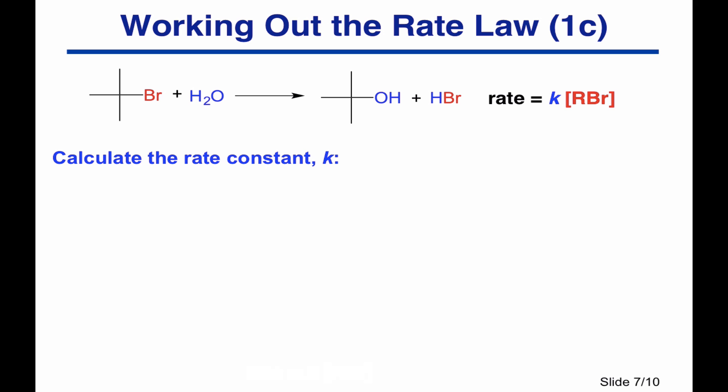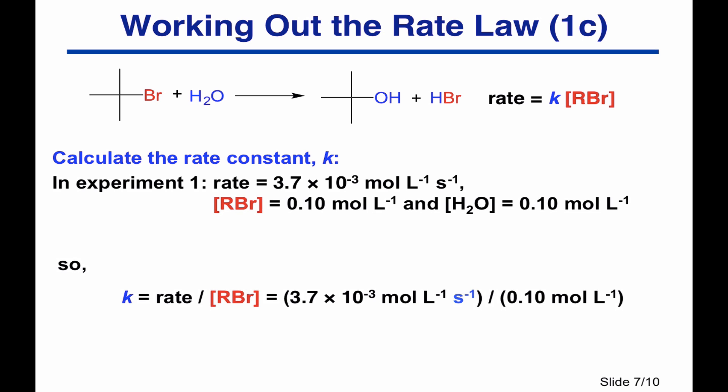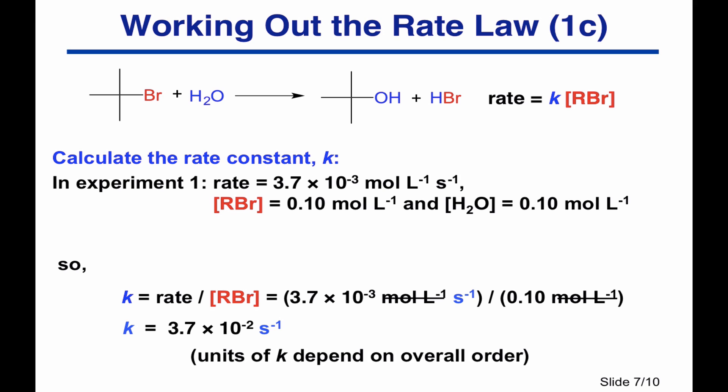Now we've worked out the rate law, we can calculate the value of the rate constant. It shouldn't matter which experiment we use — using experiment one, the rate was 3.7 × 10⁻³ mol/L/s with alkyl bromide and water concentrations of 0.1 mol/L. K equals the rate divided by the alkyl bromide concentration: 3.7 × 10⁻³ ÷ 0.1 = 3.7 × 10⁻². For units: mol/L/s on top divided by mol/L cancels to give units of s⁻¹. The units of K depend on the reaction order.